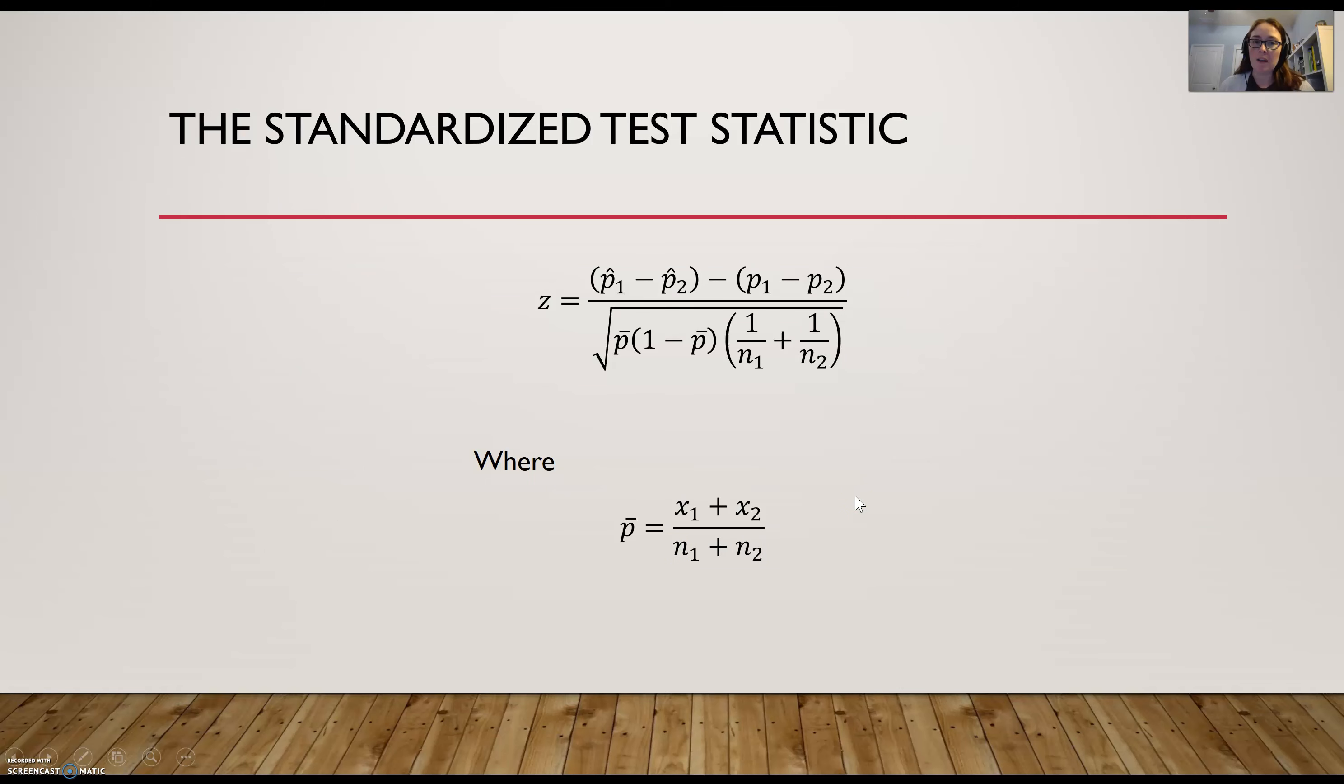Some other formulas that we need for this test is this formula for the z-score. Now usually the population proportions are going to be, the difference of them is going to be 0, so this piece right here is not really going to show up, but the rest of this is. And this P-bar, I've got a separate formula to calculate that, just to break it up a little bit. You're just adding up the number of successes in each sample, and dividing that by the sum of the sample sizes.